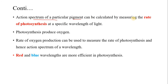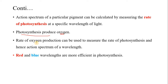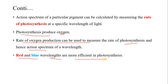The action spectrum of a particular pigment can be calculated by measuring the rate of photosynthesis at a specific wavelength of light. As we know that photosynthesis produces oxygen, the rate of oxygen production can be used to measure the rate of photosynthesis and hence the action spectrum at a specific wavelength. The more oxygen produced at a given wavelength, the faster the rate of photosynthesis, meaning that light is more efficient for photosynthesis and its action spectrum is higher. So the red and blue wavelengths are the most efficient and most effective lights for photosynthesis — the action spectrum of blue and red light is maximum.